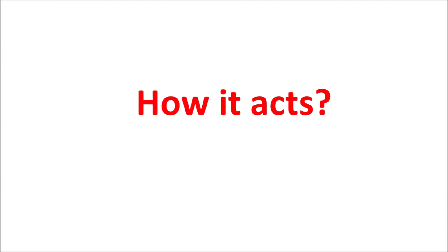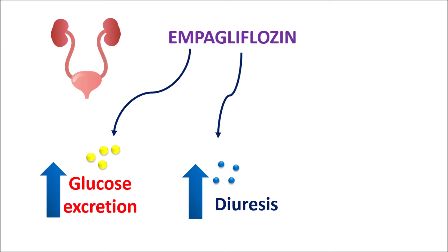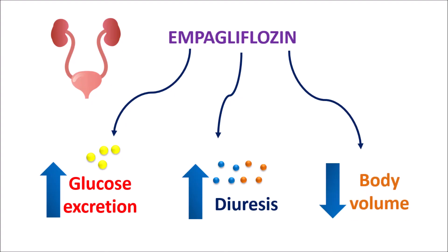Let us see how this drug acts. Empagliflozin mainly acts on the renal system. One of its primary actions is to increase glucose excretion by reducing its absorption in the renal tubules. Along with glucose excretion, empagliflozin can also increase diuresis — it has a natriuretic effect, increasing excretion of sodium and water molecules. Because of excretion of glucose, sodium, and other minerals, body volume is reduced, which reduces cardiac work and cardiac load, improving symptoms in patients with risk of heart failure.